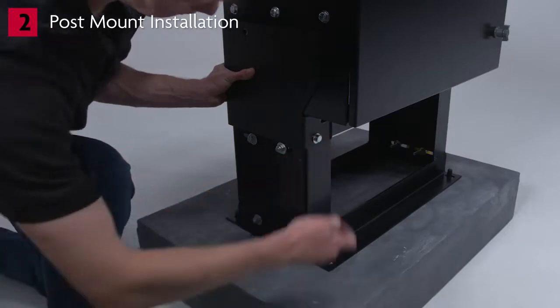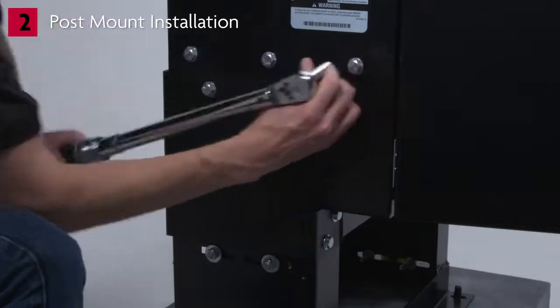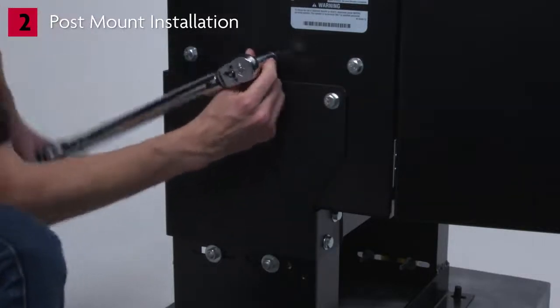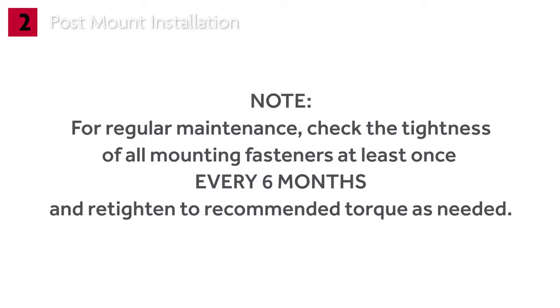Secure the operator to the mounting base using the included hardware. Tighten to 30 foot-pounds. Note, for regular maintenance, check the tightness of all mounting fasteners at least once every six months and re-tighten to recommended torque as needed.